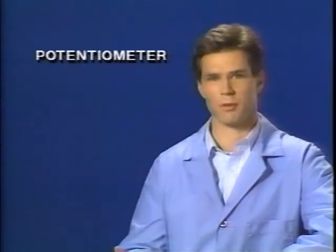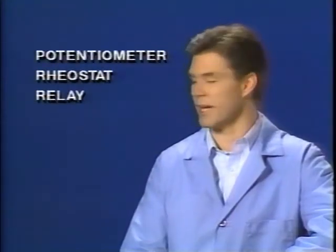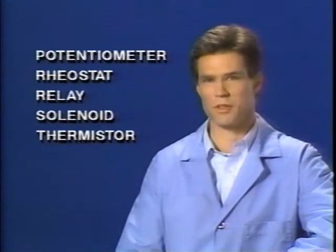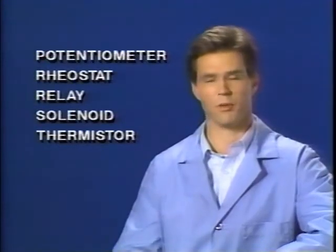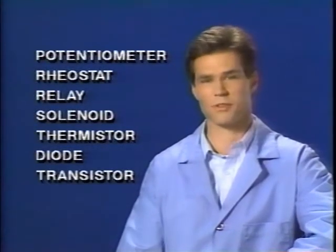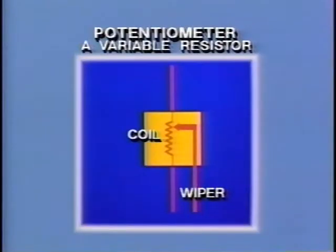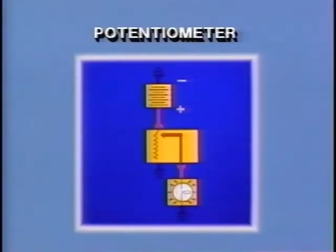Let's take a look at some electrical and electronic circuit components. Electrical components we will cover include a potentiometer, rheostat, relay, solenoid, and thermistor. As for electronic components, we will cover diodes and transistors. A potentiometer is a variable resistor with a wire coil and a movable contact called the wiper. Current enters and travels through the coil to ground, as well as through the wiper to the circuit load and to ground.